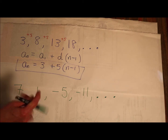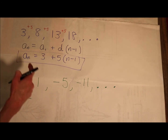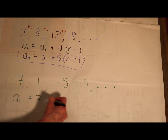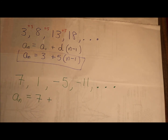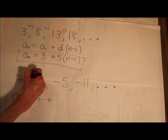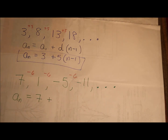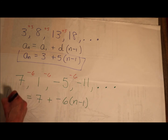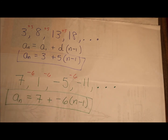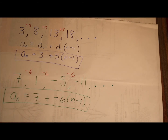Let's try this next one. The nth term is going to be my first term, which is 7, plus my common difference. My common difference here is negative 6 — minus 6, minus 6. So my common difference is negative 6, times n minus 1. There's an explicit equation that would describe this arithmetic sequence.